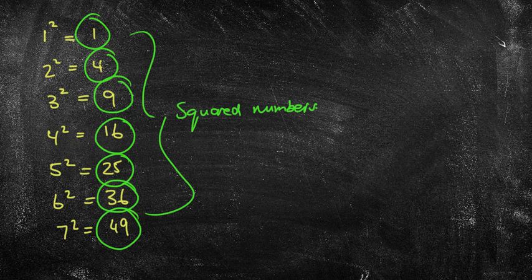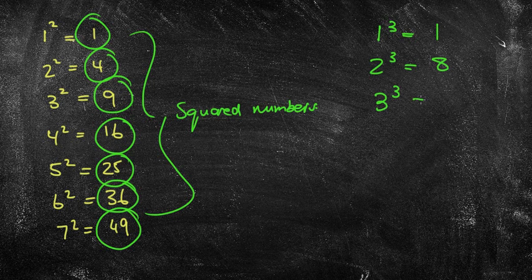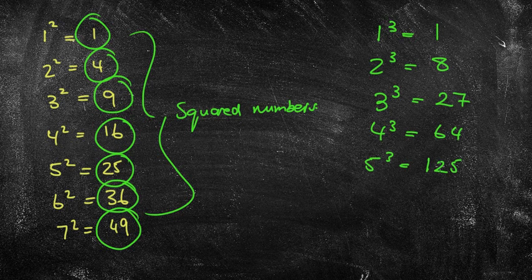You can also do the same thing for cubes, though it's a little bit more challenging. 1 cubed is 1 times 1 times 1, which is 1. 2 cubed is 2 times 2 times 2, which is 8. 3 cubed is 3 times 3 times 3, which is 27. 4 cubed is 4 times 4 times 4, which is 64. 5 cubed is 5 times 5 times 5, which is 125. For cubes we're multiplying by itself 3 times, and for squares, 2 times.